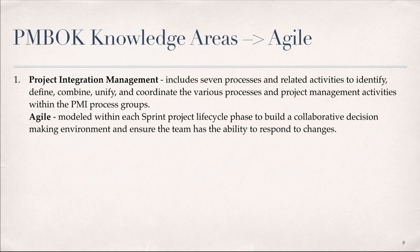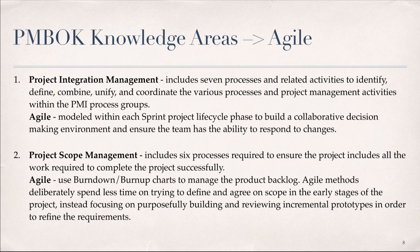Project Management Integration includes seven processes and related activities to identify, define, combine, unify, and coordinate the various processes and project management activities within the PMI process groups. In Agile, this is modeled within each sprint project lifecycle phase to build a collaborative decision-making environment and ensure the team has the ability to respond to changes. Project Scope Management includes six processes required to ensure the project includes all the work required to complete the project successfully. In Agile, we use burn-down or burn-up charts to manage the product backlog, deliberately spending less time trying to define and agree on scope early, instead focusing on building and reviewing incremental prototypes to refine requirements.